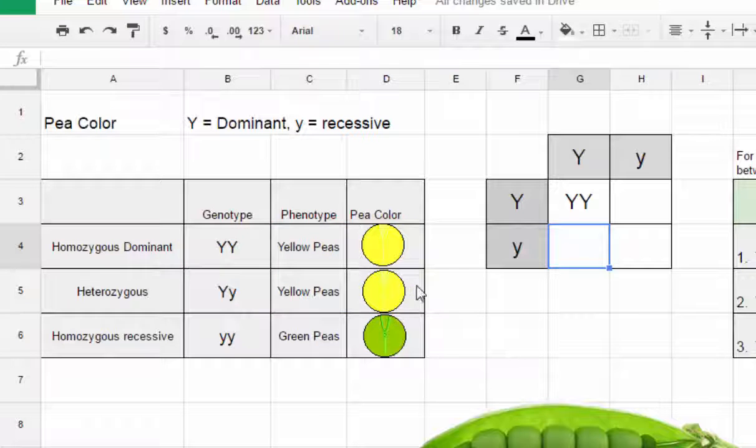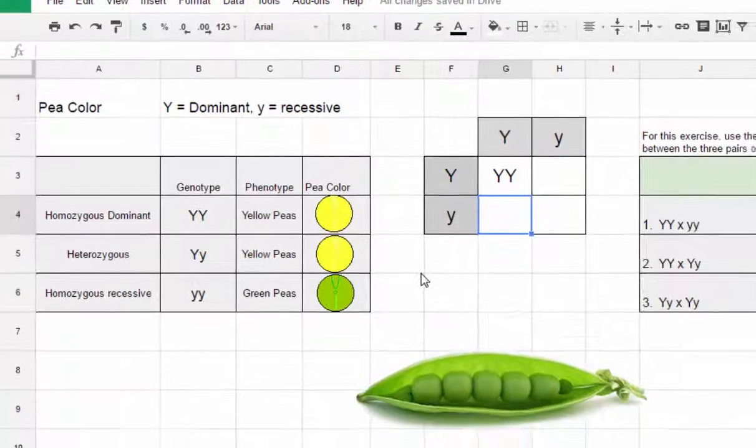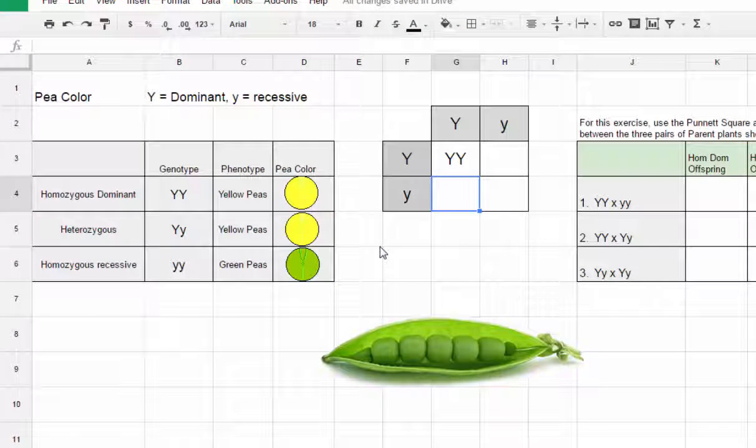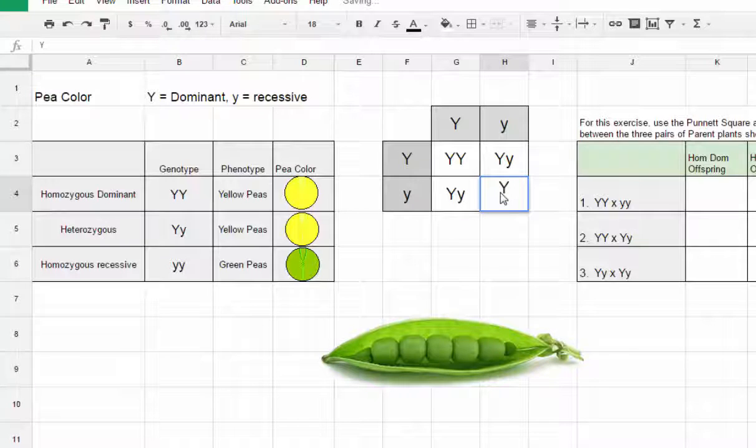What I wanted to do is use some of the conditional formatting that's available in a Google Sheet so that as kids fill in a chart like this one, they have a visual reminder right away.